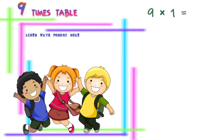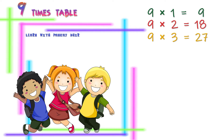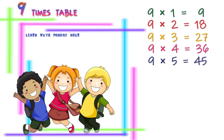9 ones are 9, 9 twos are 18, 9 threes are 27, 9 fours are 36, 9 fives are 45, 9 sixes are 54.